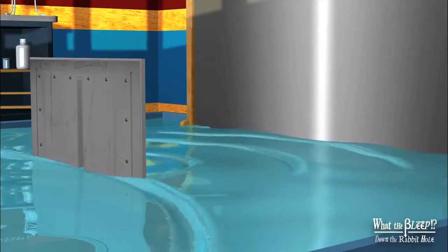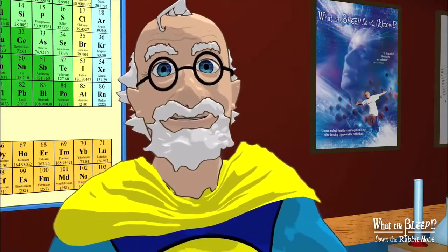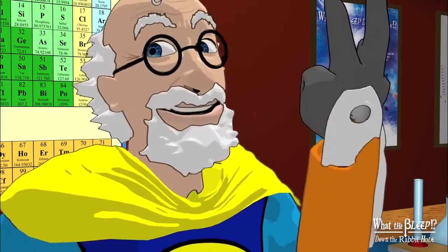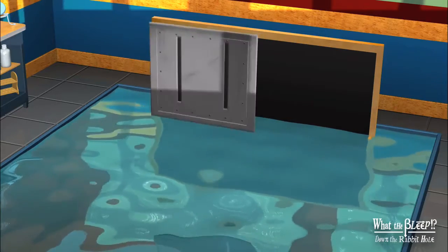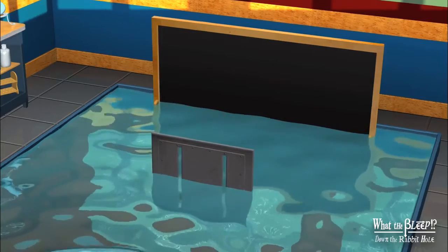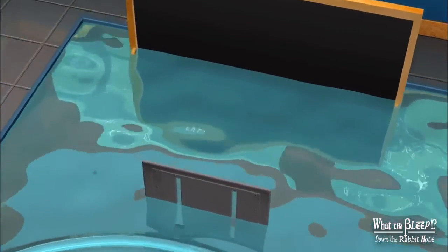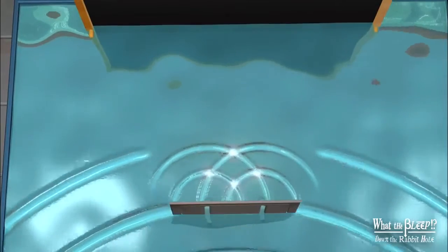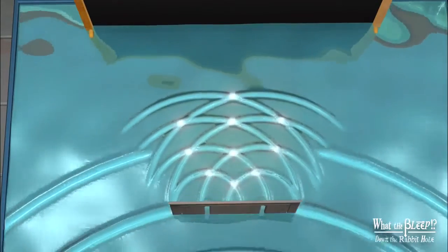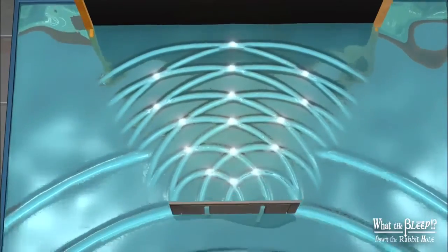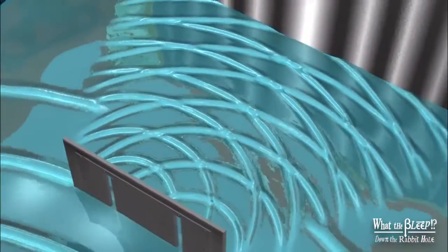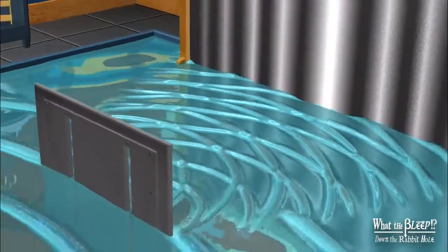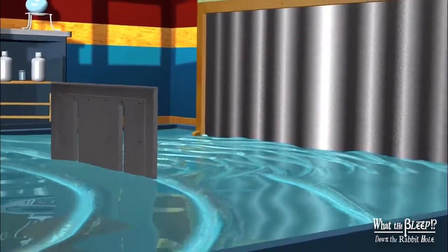But when we add the second slit, something different happens. If the top of one wave meets the bottom of another wave, they cancel each other out. So now there is an interference pattern on the back wall. Places where the two tops meet are the highest intensity, the bright lines, and where they cancel, there is nothing.